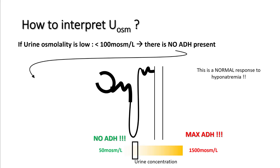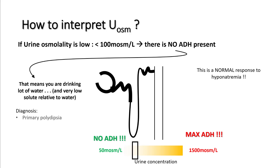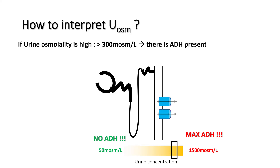If your urine osmolality is low, there is no ADH present — this is a normal response to hyponatremia, meaning you are drinking a lot of water with very low solute relative to water. This would be seen in conditions such as primary polydipsia, psychogenic polydipsia, beer potomania, and tea-and-toast syndrome. If urine osmolality is high, there is ADH present in the system.